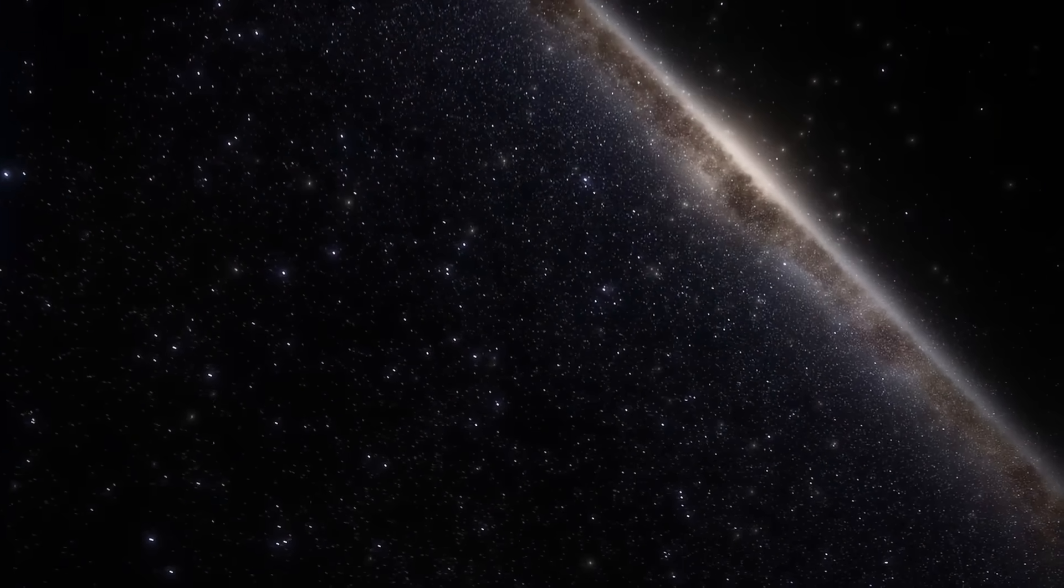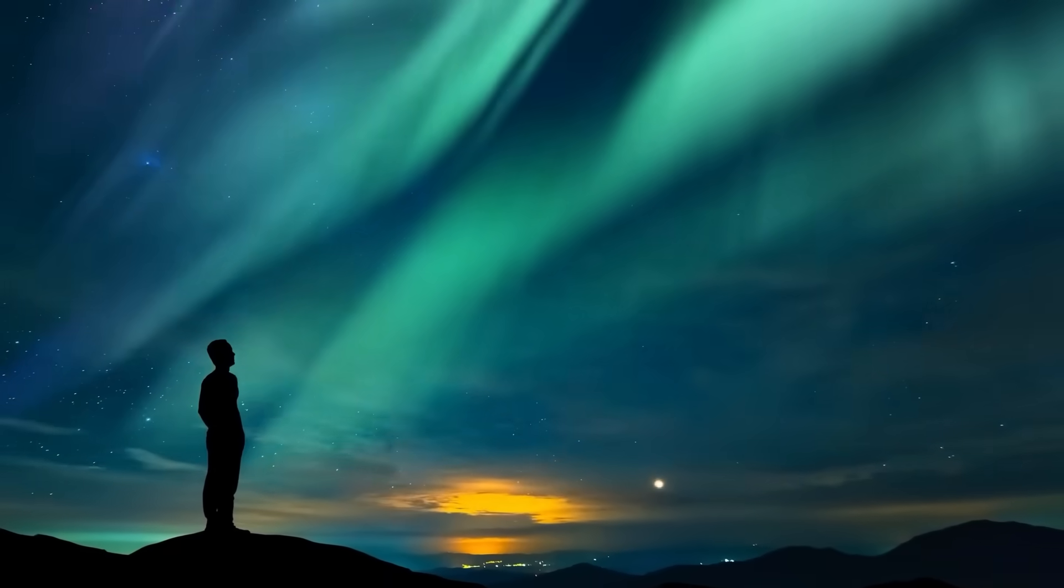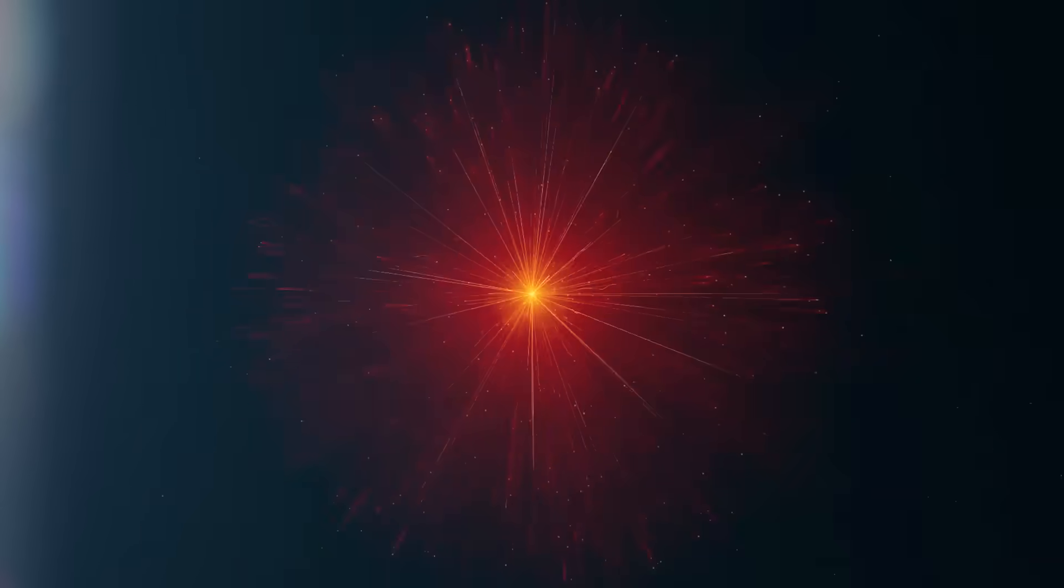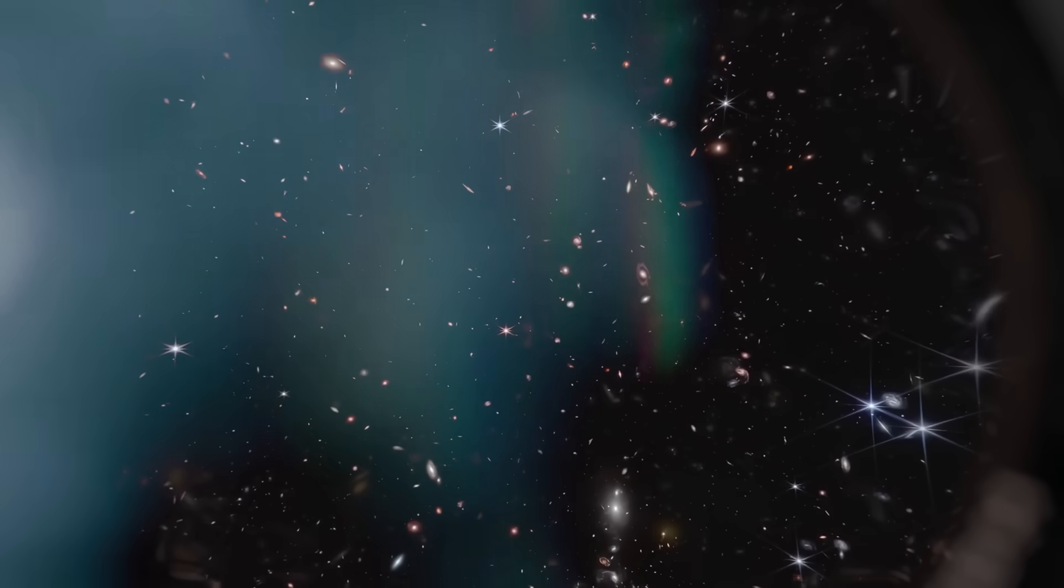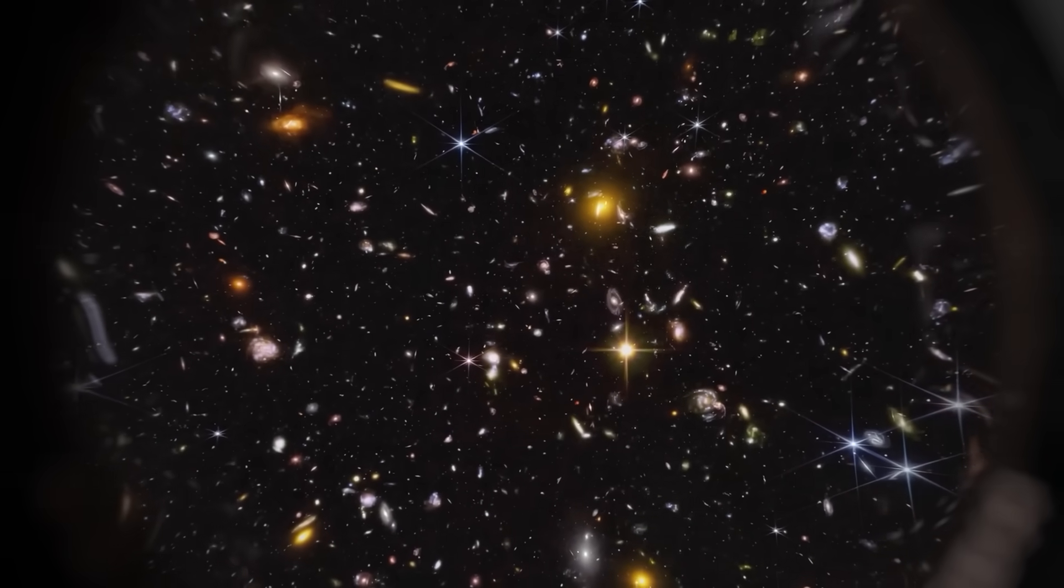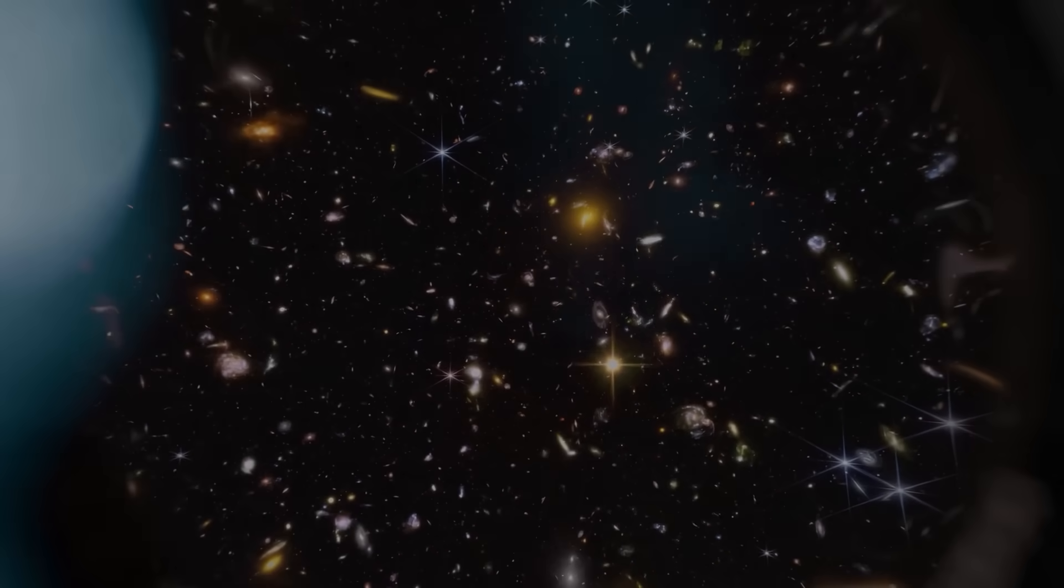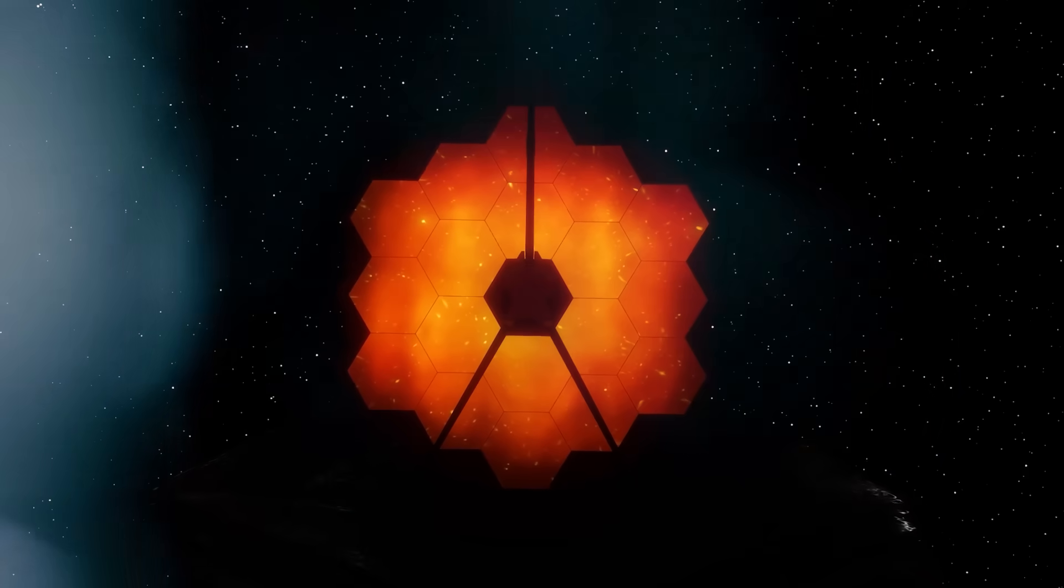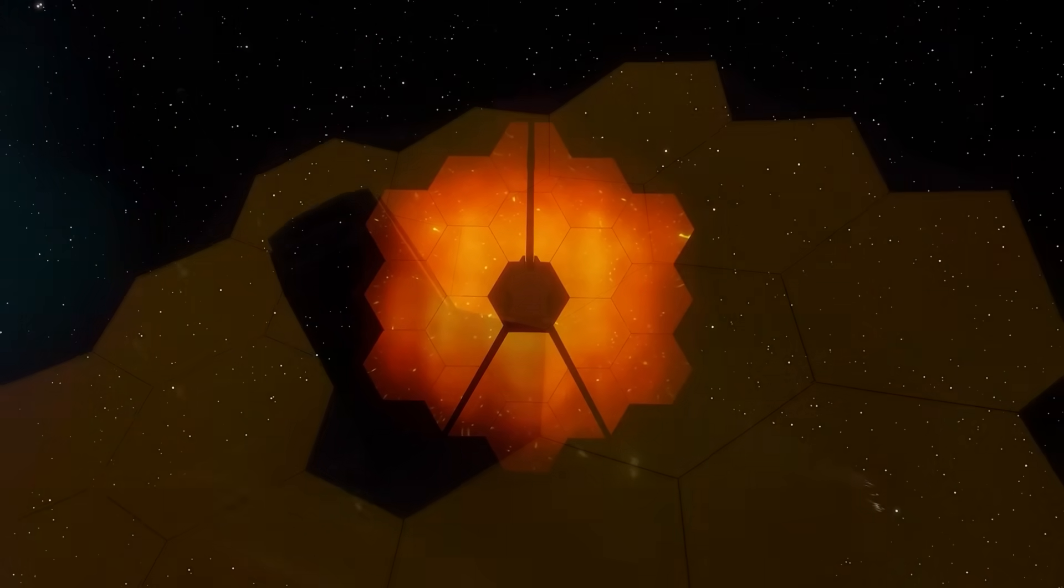But here they were. Galaxies less than 400 million years old showing signs of multiple generations of stellar death and rebirth. That would mean that not only had the first stars formed and died, but that the cycle had already repeated more than once. The early universe, it seems, wasn't quietly waking up. It was sprinting, forging, burning, and exploding in ways no one anticipated.